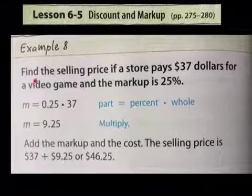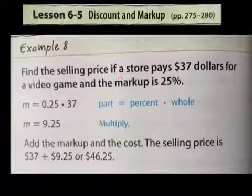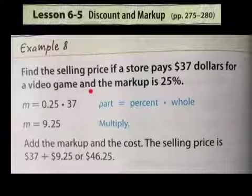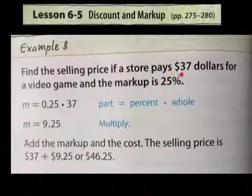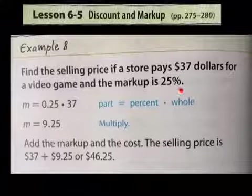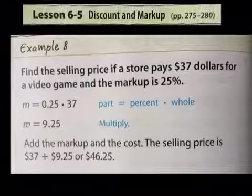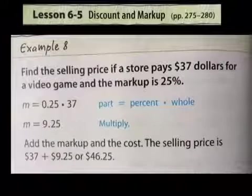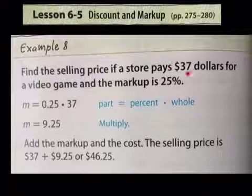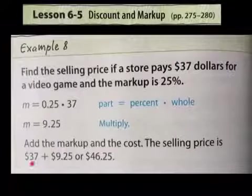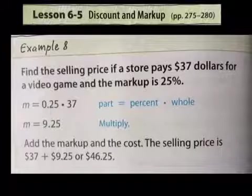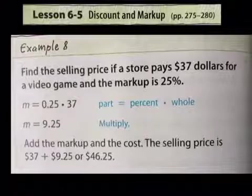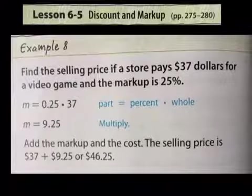For example, here we find the selling price if a store pays $37 for a video game and the markup is 25%. So the store buys the game for $37 and it's going to sell it for an additional 25%, that's called the markup. So how much should the store sell it for if they want to make 25% profit? What we do is we find what 25% of this value is and we add it to it. Now we don't have to do it like that.